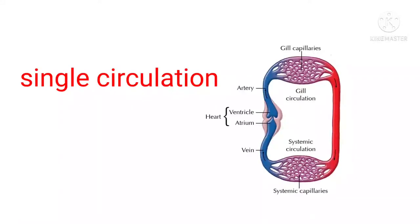Next, we are going to single circulation and double circulation. In single circulation, blood goes to the heart only once before it reaches all body parts. That means blood flows: heart to body parts, only once. The best example of single circulation is fishes.